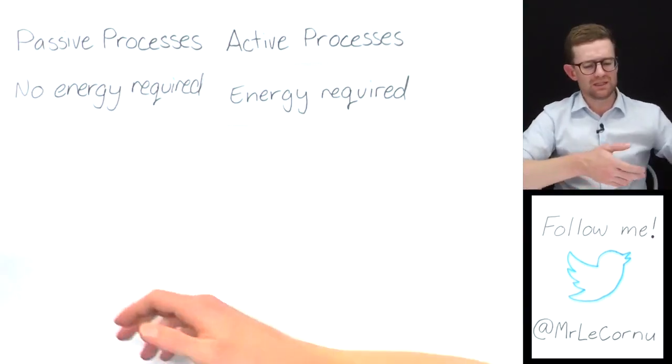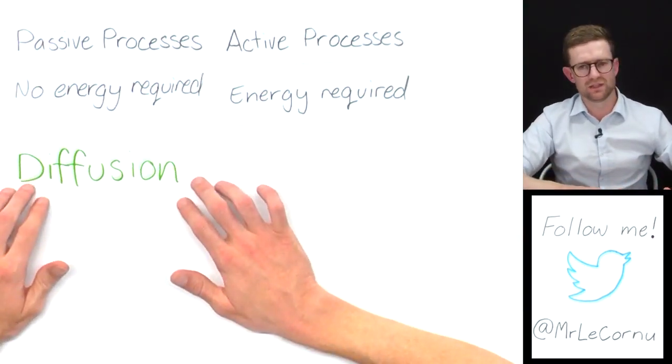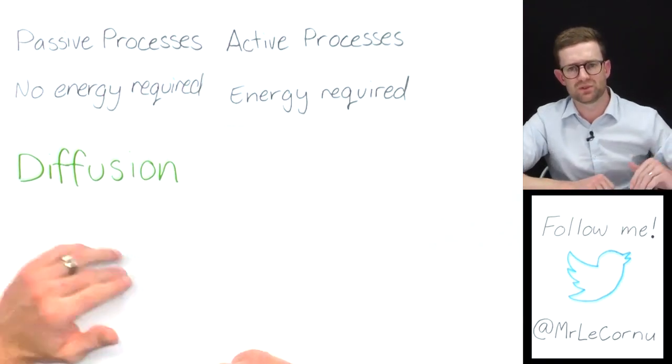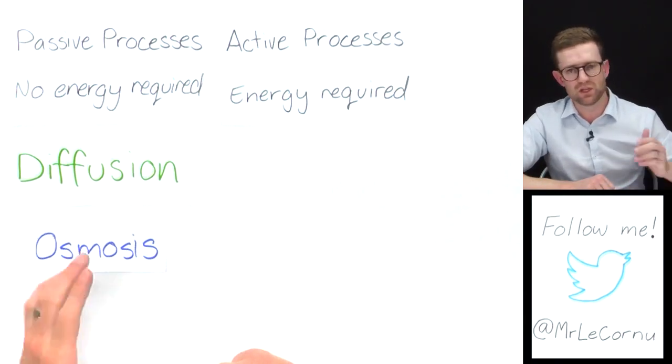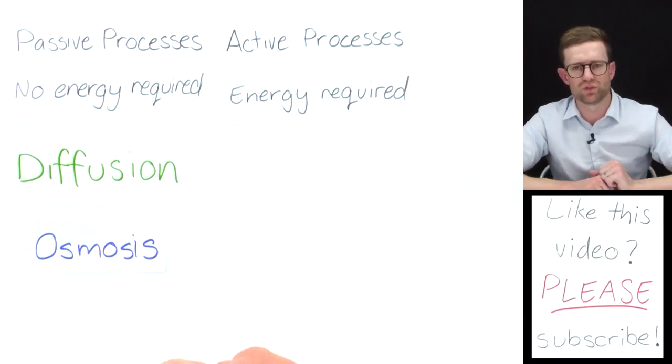Examples of passive processes are things like diffusion, the movement of substances from a high concentration to a low concentration. Osmosis, a special case of diffusion but for water. I've made videos on both of those that you can check out.